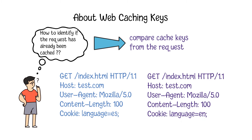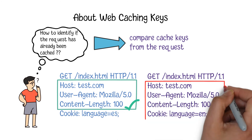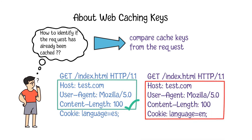For example, for these two HTTP requests, if we take the first three keys as the criteria, they will be identified as the same request. However, if we add the last key into the group, they will be considered as different requests.